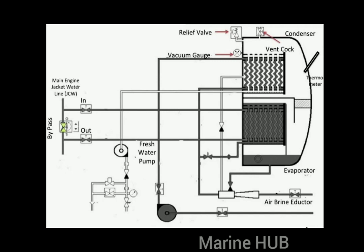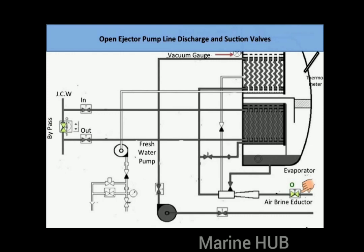The other components of the fresh water generator include the main engine jacket water line with a bypass valve, relief valve, vacuum gauge, thermometer, and a vent valve which must be shut before operating the fresh water generator. Now let's understand the operating procedure of this equipment.